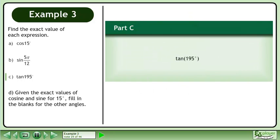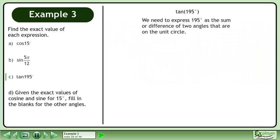In part C, find the exact value of tan 195 degrees. We need to express 195 degrees as a sum or difference of two angles that are on the unit circle. 195 degrees can be expressed as a sum of 150 degrees plus 45 degrees, both of which are on the unit circle.